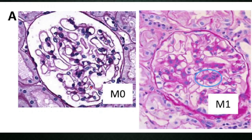For IgA nephropathy diagnosis, even though clinical symptoms and the age group most commonly affected are in the second to third decade, a renal biopsy is compulsory to confirm the diagnosis. It might sometimes co-occur with minimal change disease, in which case light microscopy findings may be normal. The important finding on light microscopy is diffuse mesangial expansion.